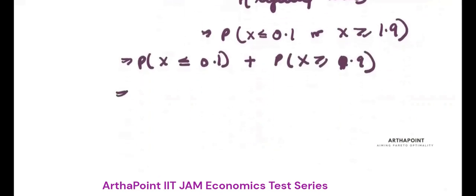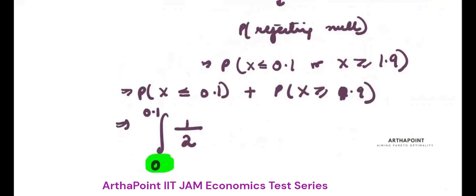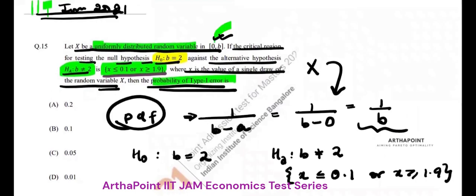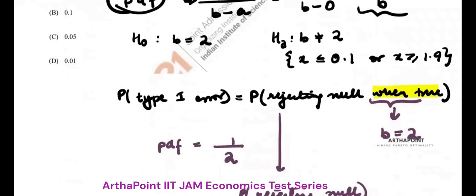What is, how do you define probability of a function? Probability of X less than or equal to 0.1 will be its probability density function integrated from 0 to 0.1. Why am I taking 0 here? Because it is defined in the space from 0 to B and B is 2 because null is true.